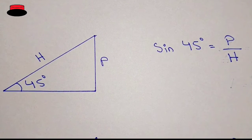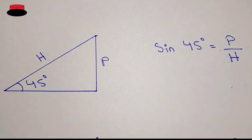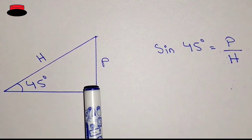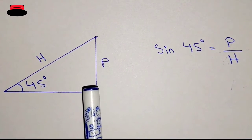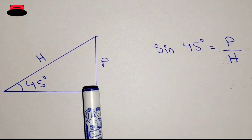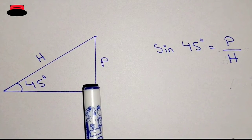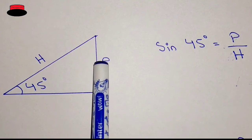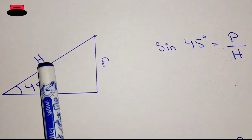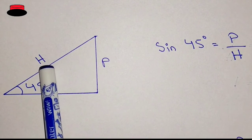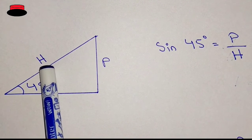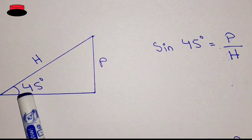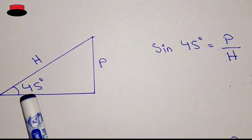You know that in a right angle triangle, one of the angles is equal to 90 degree. This is the right angle triangle, and we all know that this is the base, this is the perpendicular, and this is the hypotenuse — the longest side. Let's suppose this angle is 45 degree.